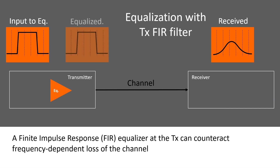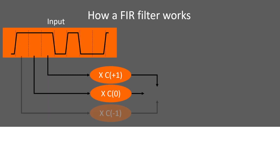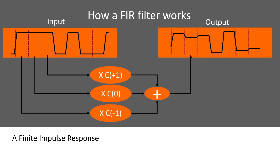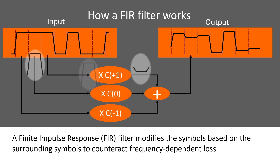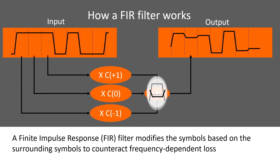A finite impulse response, or FIR, equalizer at the TX can counteract frequency-dependent loss of the channel. A finite impulse response filter modifies the symbols based on the surrounding symbols to counteract frequency-dependent loss.